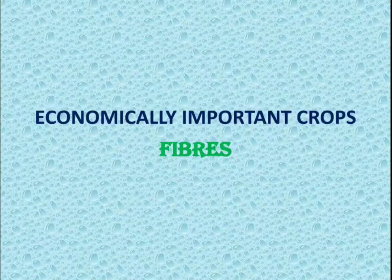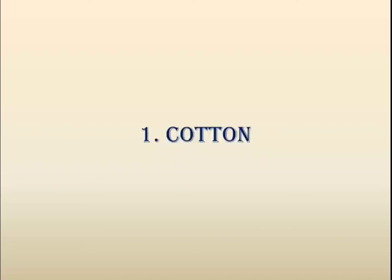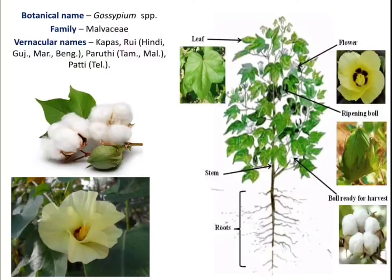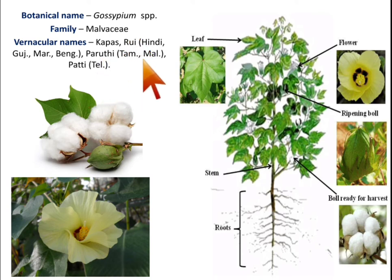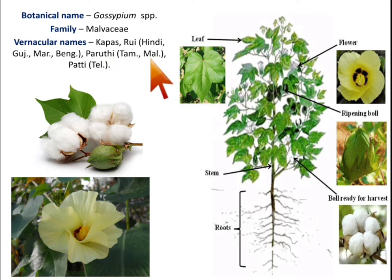In this video we will discuss economically important crops in the fiber category. The first important fiber crop is cotton. The botanical name of cotton is Gossypium species, as there are many species under this genus. It belongs to the family Malvaceae. In India it is known by different names such as kapas and rui in Hindi, Gujarati, Marathi and Bengali.